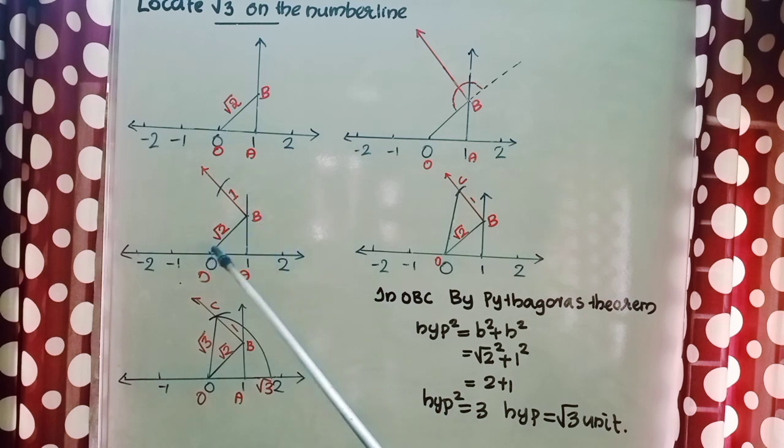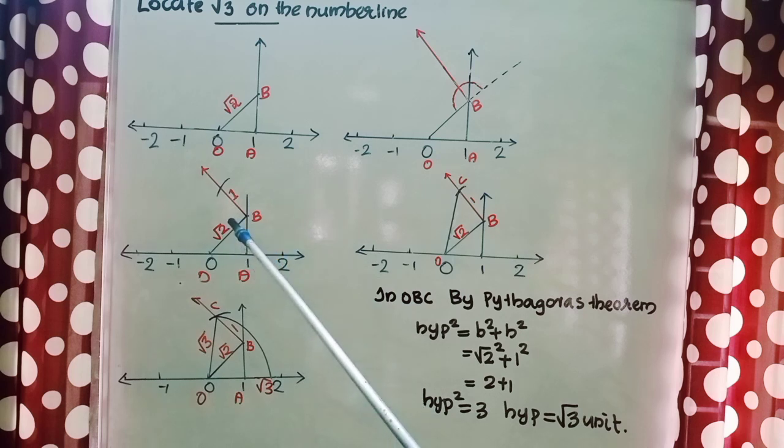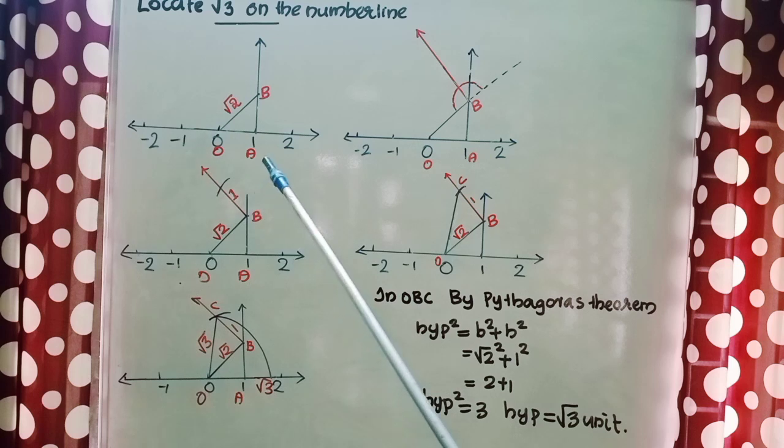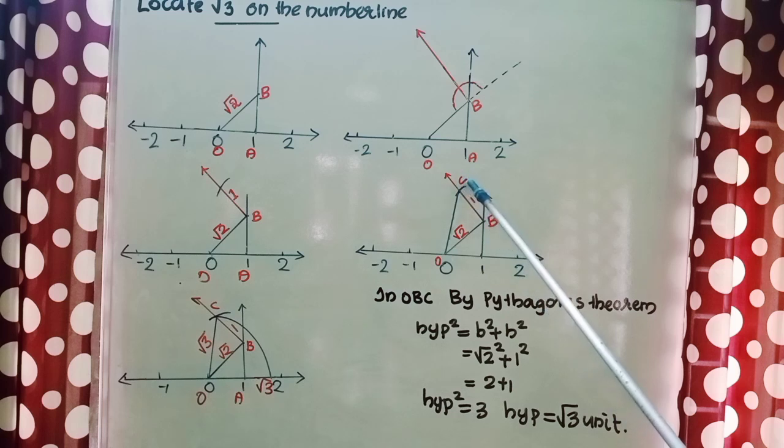1 unit distance we know how to take. The distance from 0 to 1 is the 1 unit distance that we can mark by using a compass. After that we can draw this arc. Now let us give name for that point, that is C, and you join this OC.